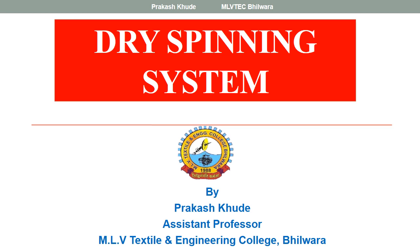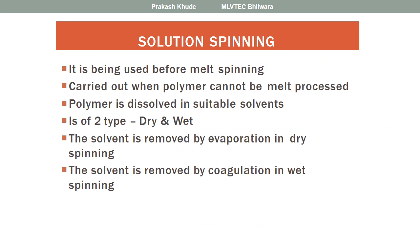Today we will discuss the dry spinning system. It comes under the solution spinning system. The solution spinning system is basically used when the polymer cannot be spun by melt spinning systems. Earlier, the solution spinning system was invented and carried out when the polymer cannot be melt spun. In that case, we first need to dissolve the polymer into a suitable solvent. There are two different types of solution spinning systems: one is dry spinning and the other is wet spinning.